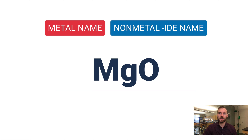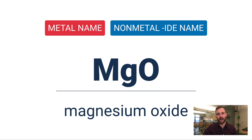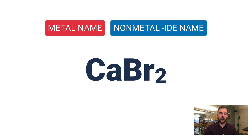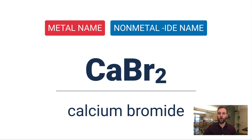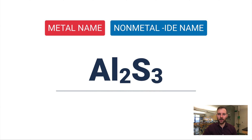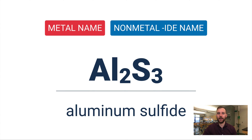Let's do one that's maybe a little less common: MgO. The metal is magnesium and the non-metal is oxygen, but I'm going to use the -ide name for oxygen, so this becomes magnesium oxide. Here's another: CaBr2. Calcium is the metal, bromine is the non-metal, so calcium bromide — you switch that ending. And Al2S3: aluminum sulfide, where sulfur becomes sulfide.